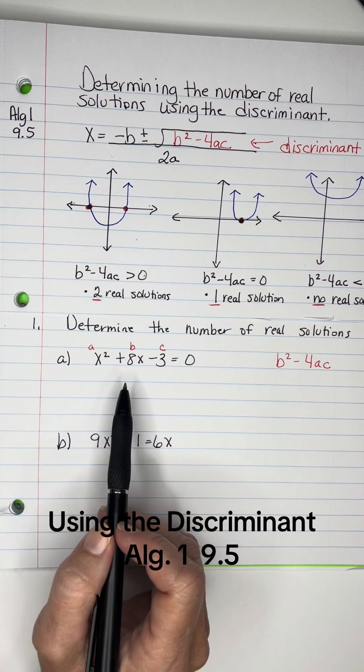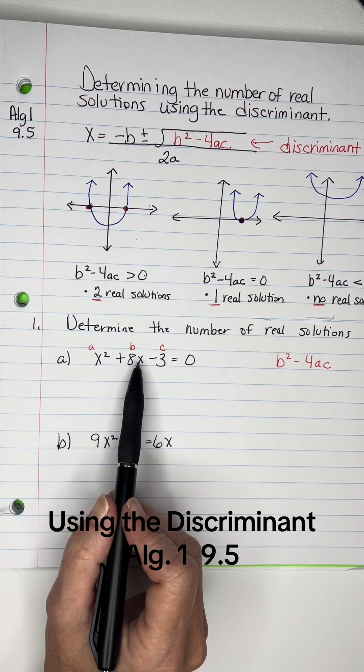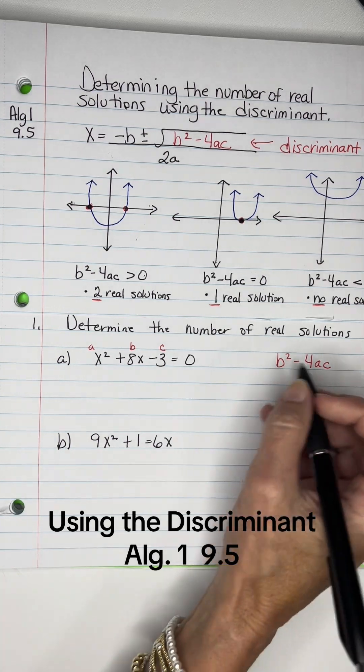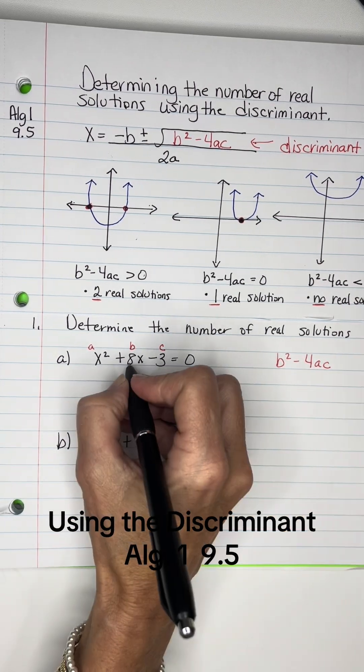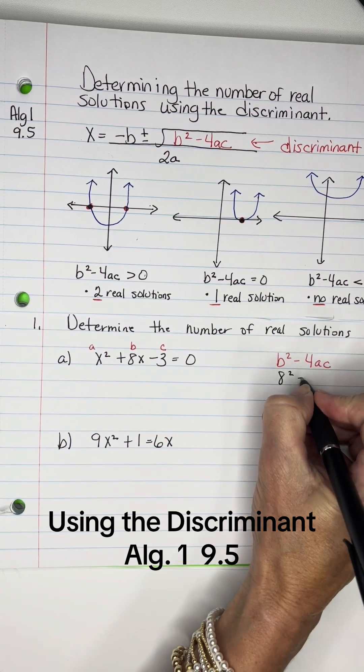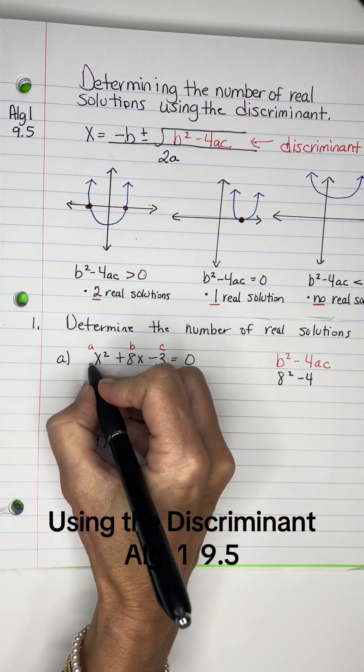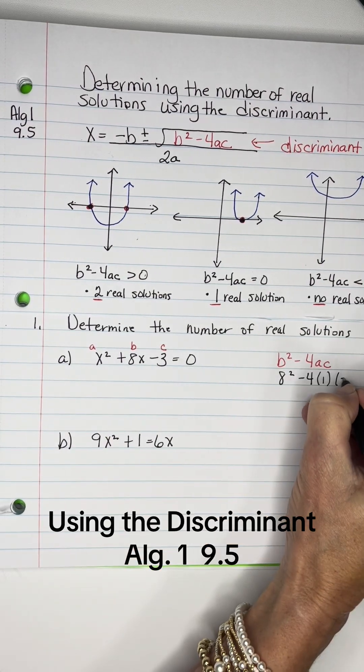All right, so let's look at this one right here. x squared plus 8x minus 3 equals zero. All right, B squared minus 4AC. The B is the 8, so we've got 8 squared minus 4. And then the A is a 1, and the C is a negative 3.